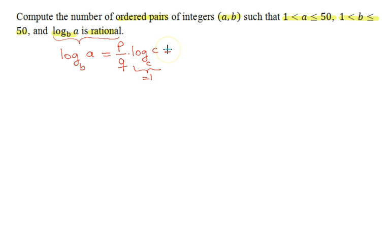I can rewrite this expression as logarithm in base c^q of c^p. I've made use of a very well-known fact that the numerator of our coefficient will become the exponent of the c here, and the denominator will become the exponent of the base. This immediately implies that our ordered pair (a, b) should be of the form c^p and c^q.